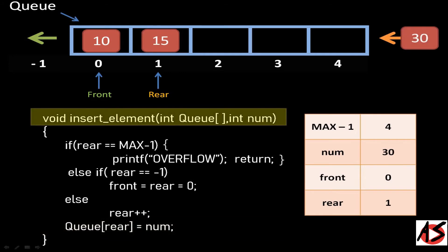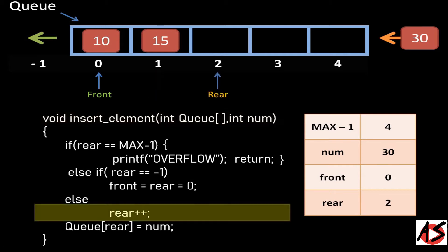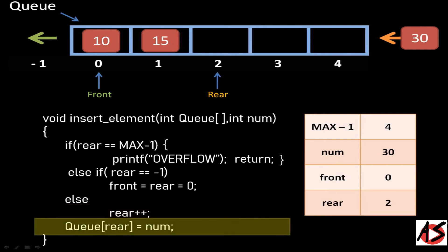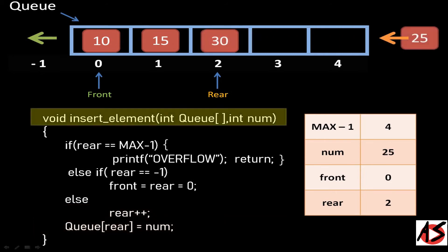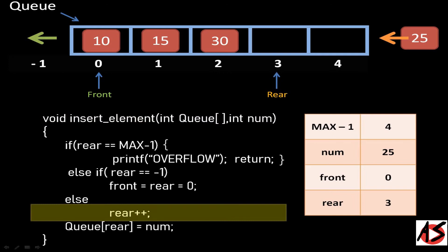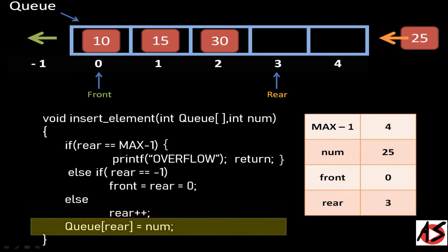Now we want to add one more element, 30, to the Queue. The rear pointer is incremented to 2 and element 30 is inserted at the second position of the Queue. Similarly, we want to add 25, so the rear pointer increments by 1 to 3, and 25 is inserted at the third position of the Queue.